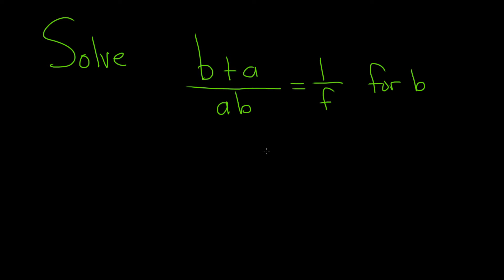In this problem we have this equation and we have to solve for little b. So the little b is in two places. It's in the numerator and it's also in the denominator. So it might be a good idea to start this problem by just getting rid of all of these fractions. So let's go ahead and do that.